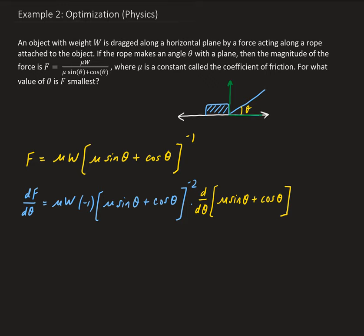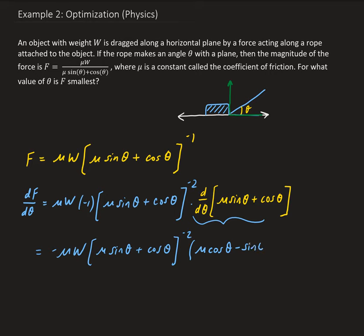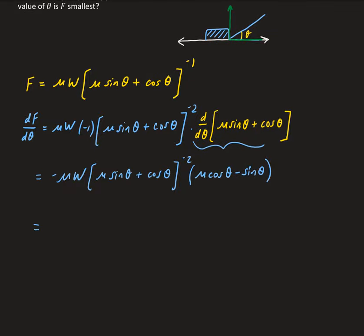This gives us minus mu times W, times mu times sine theta plus cosine theta, to the negative two. Then taking the derivative of the inside gives us mu times cosine theta minus sine theta. We can rewrite this as: dF/dtheta equals negative mu times W times (mu cosine theta minus sine theta), all divided by (mu sine theta plus cosine theta) squared.